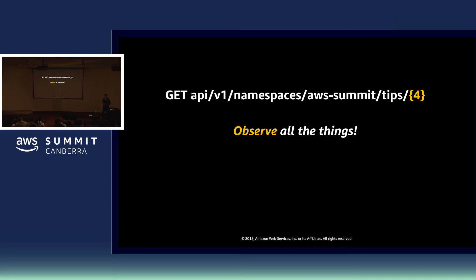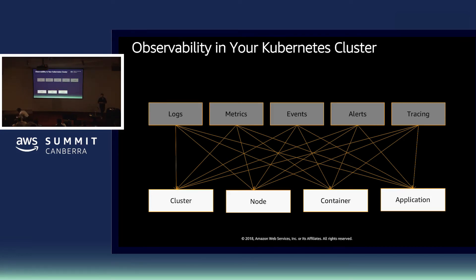Tip number four: observing all the things. Our clusters are extremely complicated beasts — lots of resources, applications, and interesting bits of data that we need to observe and learn from. We've got logs, metrics, and tracing information. Given the dynamic nature of containerized environments — a Datadog survey showed the average lifespan of a container was minutes, not hours or days — the tools we use to capture, analyze, collect, and store this information need to support that dynamic nature.